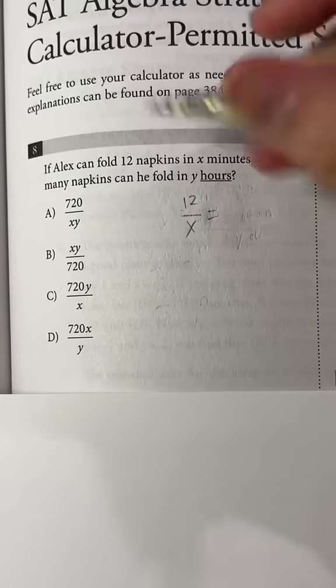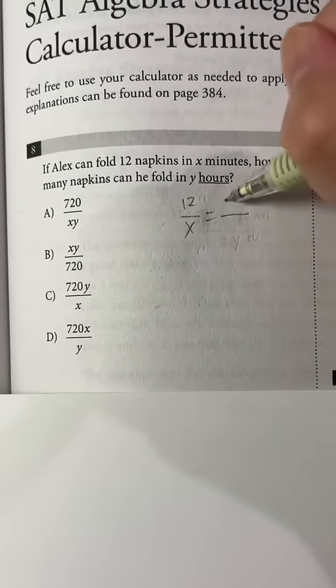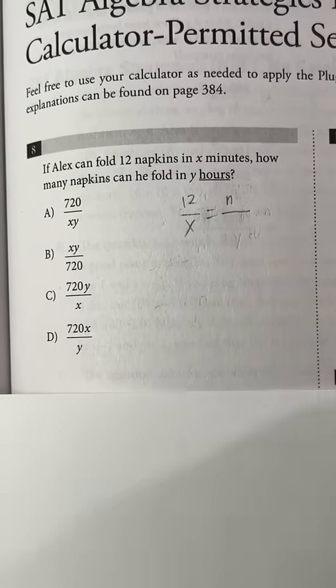And then for the second fraction, we don't know how many napkins he's going to fold, so we can set up a variable, which is n. And then time is going to be y hours.